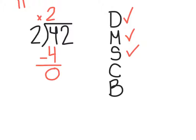C stands for compare. What we are doing is we are comparing the number we just wrote down with the divisor. This number has to be less than the divisor. Otherwise, we didn't divide correctly. In this case, 0 is less than 2, so that means that we did divide correctly.